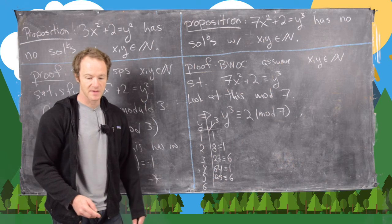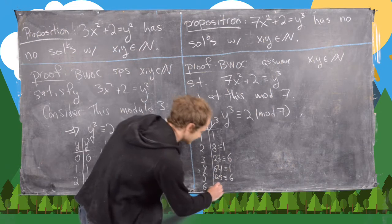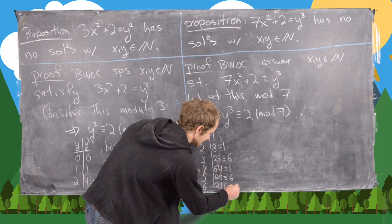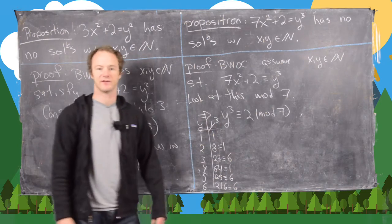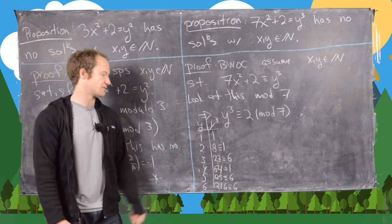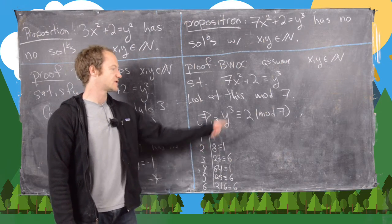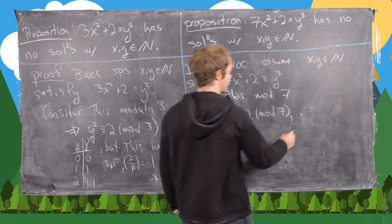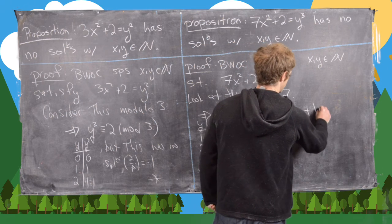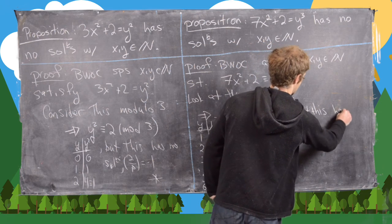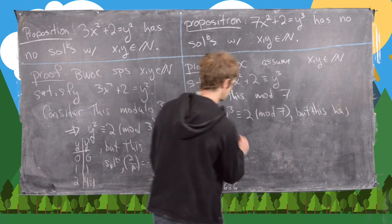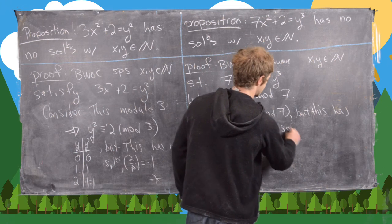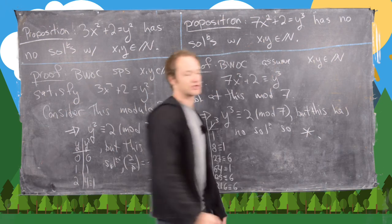And 6³ = 216 ≡ 6 (mod 7), since 216 is 6 more than 210. So the only cubic residues mod 7 are 0, 1, and 6 — and 2 is not among them. Therefore y³ ≡ 2 (mod 7) has no solution, and we have a contradiction.